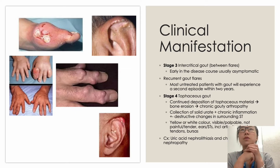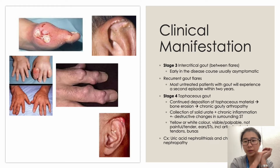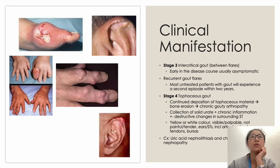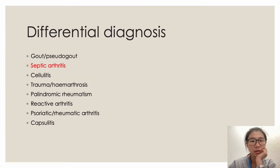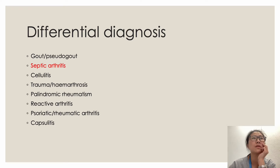Complications of gout include uric acid crystallizing in the renal pelvis causing kidney stones, and urate nephropathy from crystal accumulation in the renal parenchyma. Regarding differential diagnosis, septic arthritis is a very important differential — or concurrent — diagnosis that must be excluded. Other differentials include various forms of arthritic disorders.